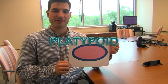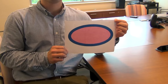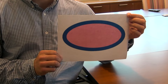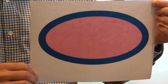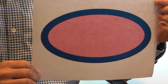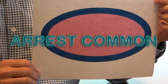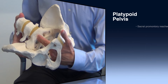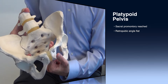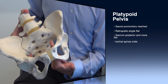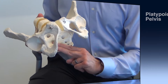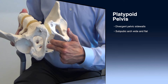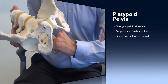The platypoid pelvic type is only found in 5% of women. The transverse diameter is very wide and the AP diameter is very narrow. The fetal head often has to engage the pelvic inlet in the transverse diameter, rotation does not occur until the head is on the perineum, and mid-pelvis transverse arrest is common. On clinical pelvimetry, the sacral promontory is reached and the retropubic angle is nearly flat. The sacrum is posterior and more flat, the spines are wide, the pelvic sidewalls are divergent, the subpubic arch is wide and flat, and the bituberous distance is very wide.